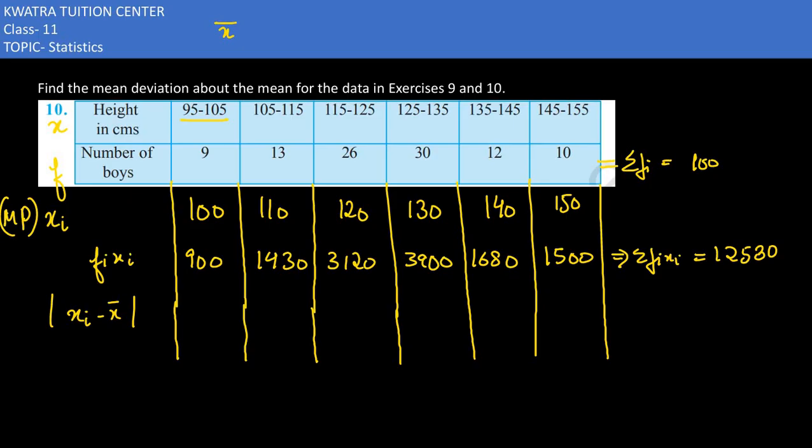How do we find the mean? I need to take summation fi xi divided by summation fi. This is 12530 divided by 100, which gives us 125.3. That is the mean in centimeters height.